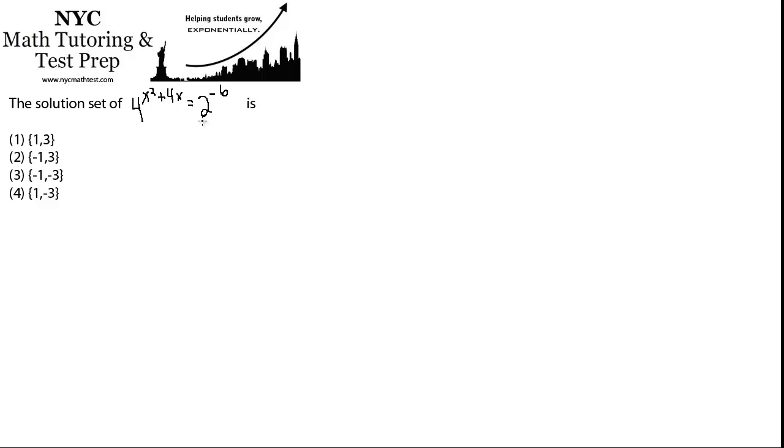So here we have on the right side 2 to the negative 6. So could we express the left side as also having base 2? Well, what is 4? 4 is nothing more than 2 squared. So what if we were to rewrite the left side of this equation as 2 squared and then have that be raised to the power that it already is, which is x squared plus 4x, and then set that equal to 2 to the minus 6.